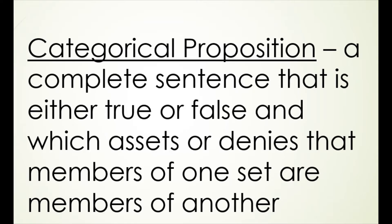A categorical proposition is a complete sentence that is either true or false, and which asserts or denies that members of one set are members of another. So a proposition is a complete sentence that is either true or false, and a categorical proposition asserts or denies that members of one set are members of another. There are four standard categorical propositions, which we'll talk about in just a minute.